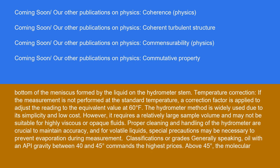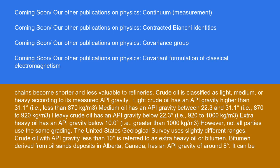Classifications or grades. Generally speaking, oil with an API gravity between 40 and 45 degrees commands the highest prices. Above 45 degrees, the molecular chains become shorter and less valuable to refineries. Crude oil is classified as light, medium, or heavy according to its measured API gravity.